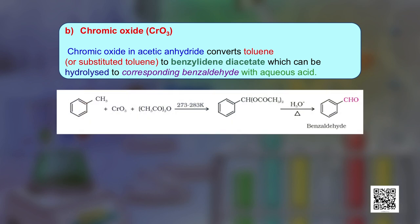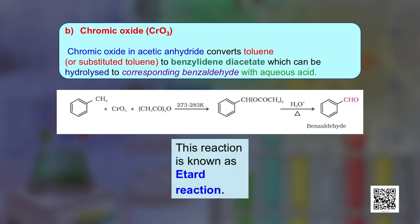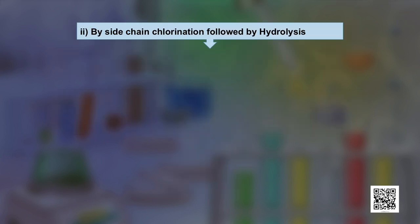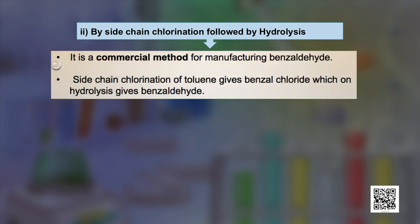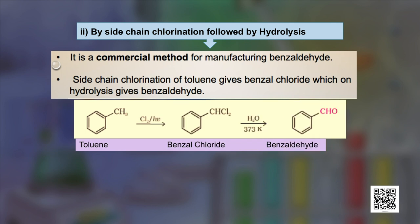The second approach uses chromium oxide (CrO3) in acetic anhydride, which converts toluene or a substituted toluene to the corresponding benzylidene diacetate, which can be further hydrolyzed with aqueous acid to the corresponding benzaldehyde. This reaction is known as the Étard reaction. The third approach is side-chain chlorination followed by hydrolysis — a commercial method for the manufacture of benzaldehyde. Side-chain chlorination of toluene gives benzal chloride, which on hydrolysis gives benzaldehyde.